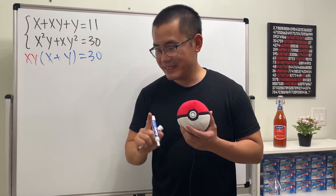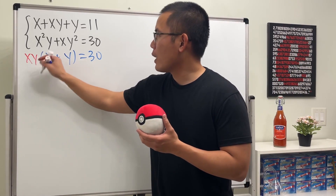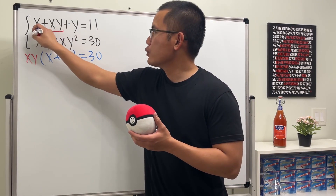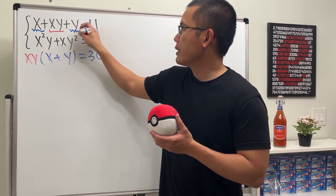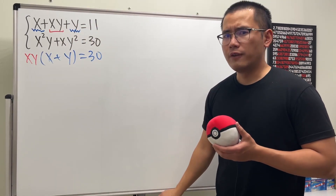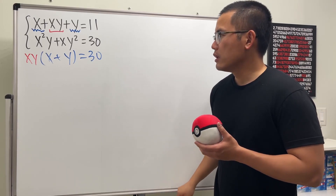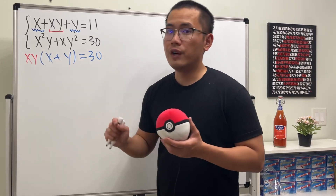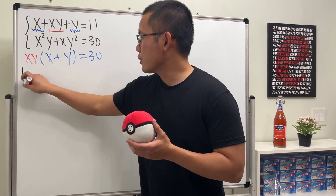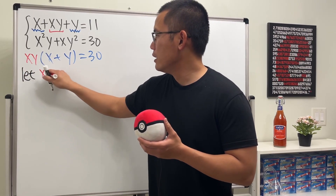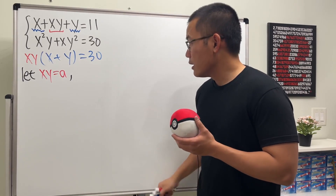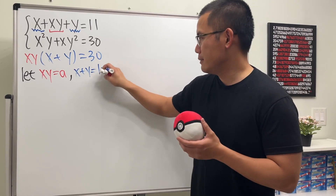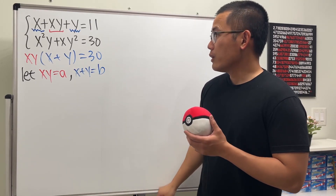Do you see it? We have xy in the first equation right here, and then x plus y, we also have it right here. So what that means is that we can actually just do a very nice substitution. Instead of working with xy or x plus y, we're looking at these as new variables — I'm going to call xy as 'a', and x plus y as 'b'.